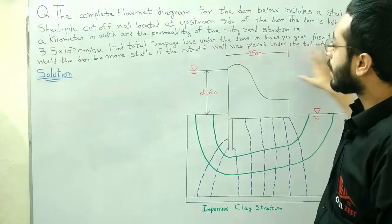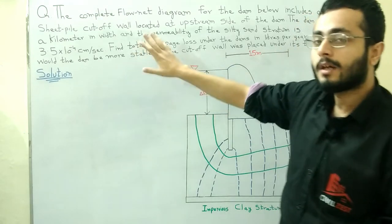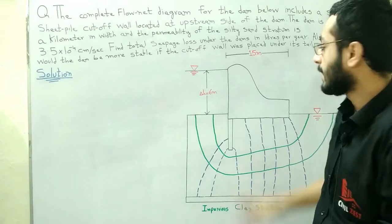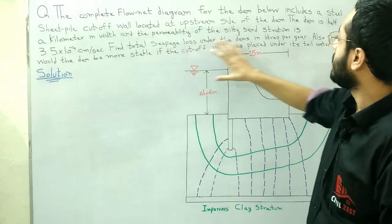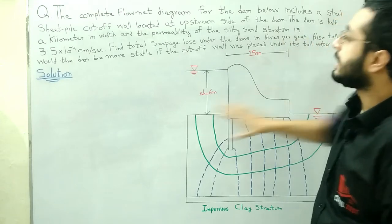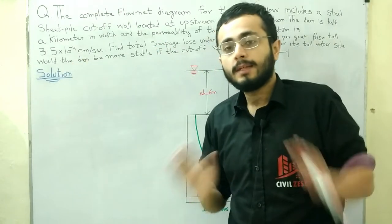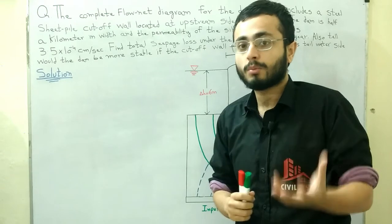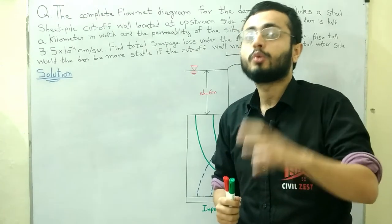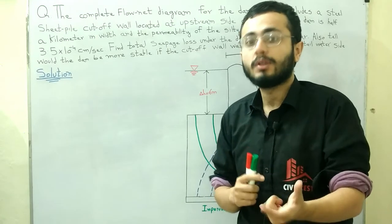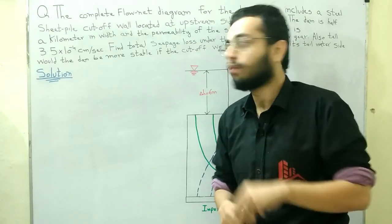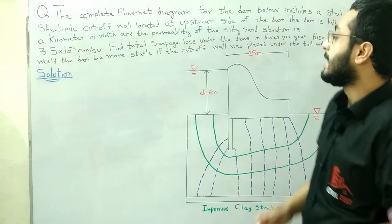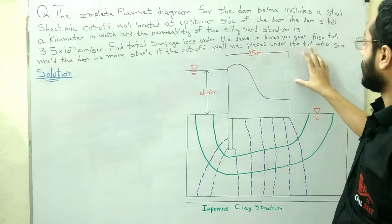The dam is half a kilometer in width, which means 1000 divided by 2 equals 500 meters. The permeability of the silty sand stratum is 3.5 × 10⁻⁴ centimeters per second. This is the hydraulic conductivity k used in the formula q = k × Δh × Nf / Nd.